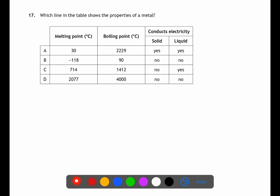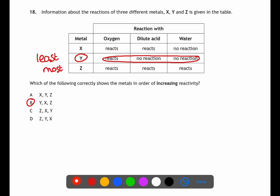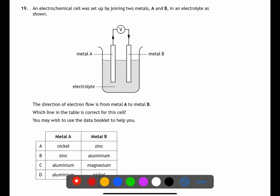For question seventeen we're looking at the properties of metals. In general, metals have high melting and boiling points, so we can eliminate B. They also conduct electricity as both solid and liquid, so A is the answer. For question eighteen we're looking at metal reactivity in increasing order. The least reactive metal is Y, as it does not react with acid or water. The most reactive is Z, as it reacts with oxygen, acid, and water. This gives us B as our answer.